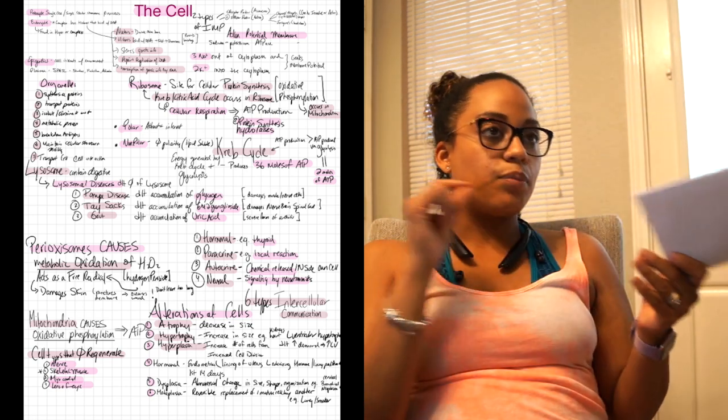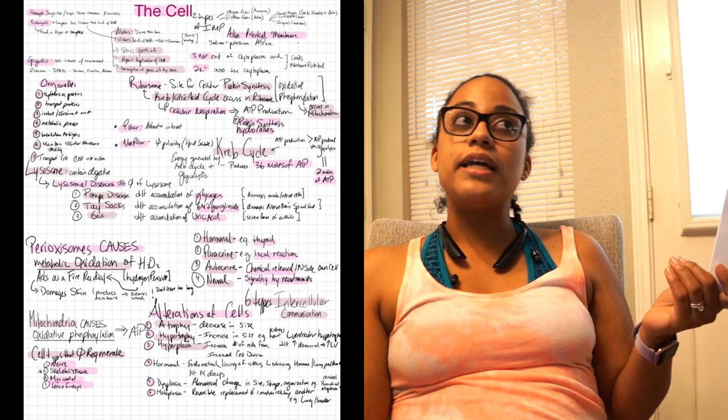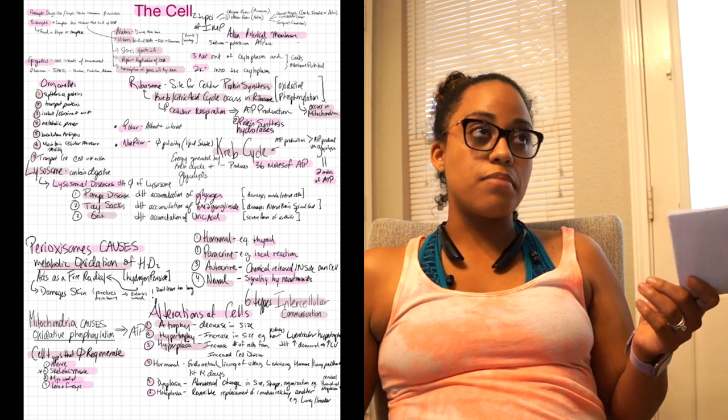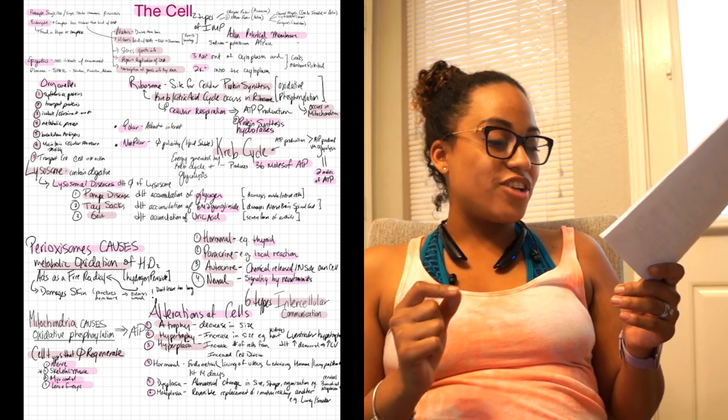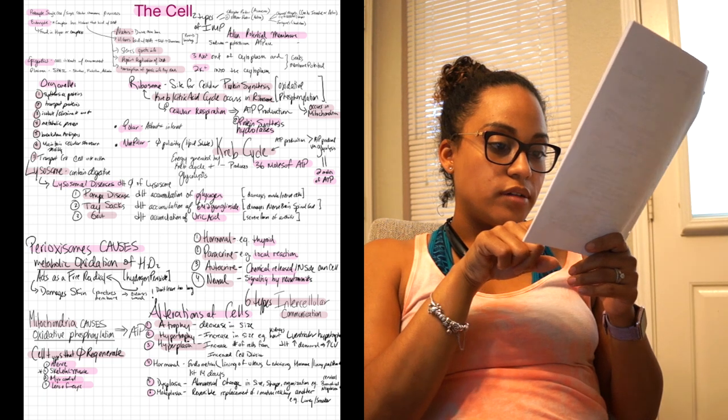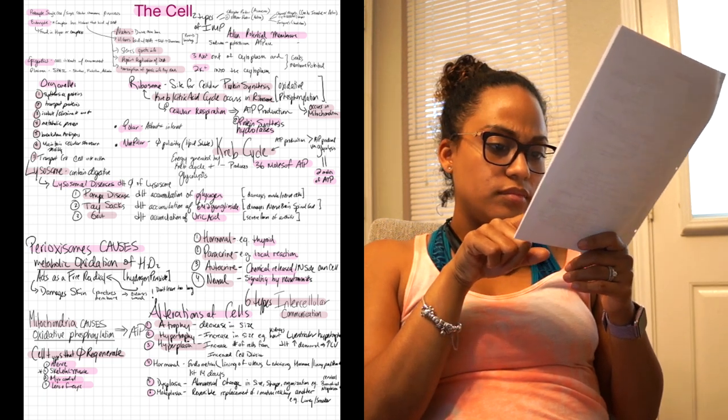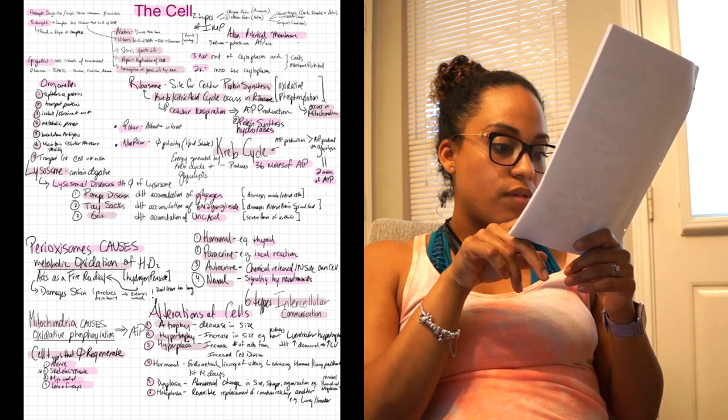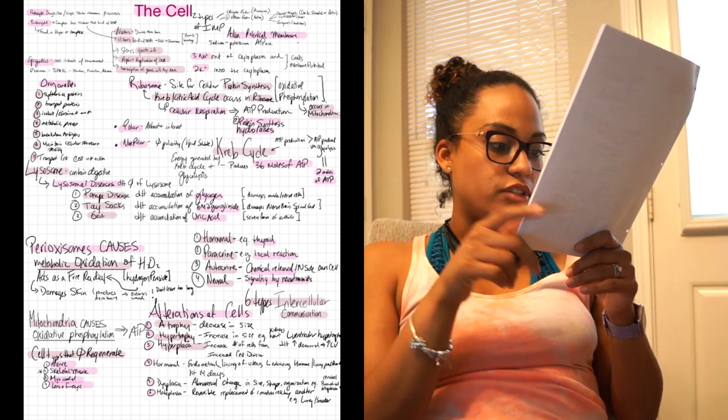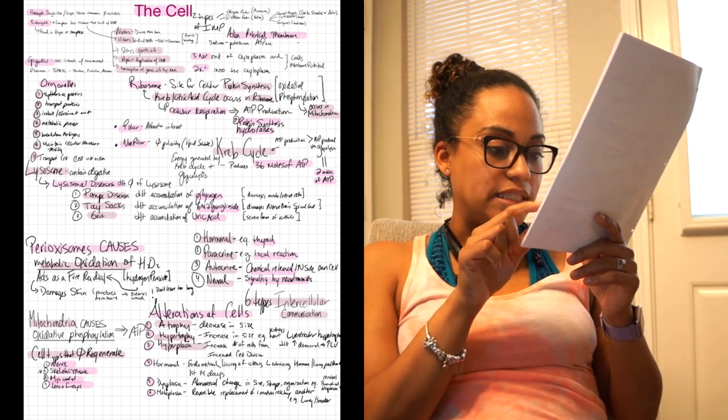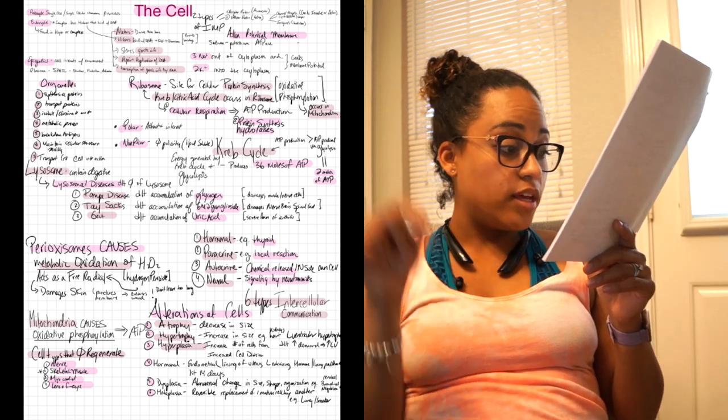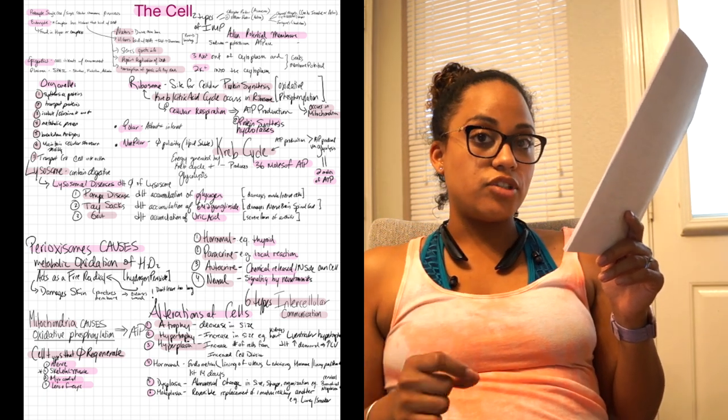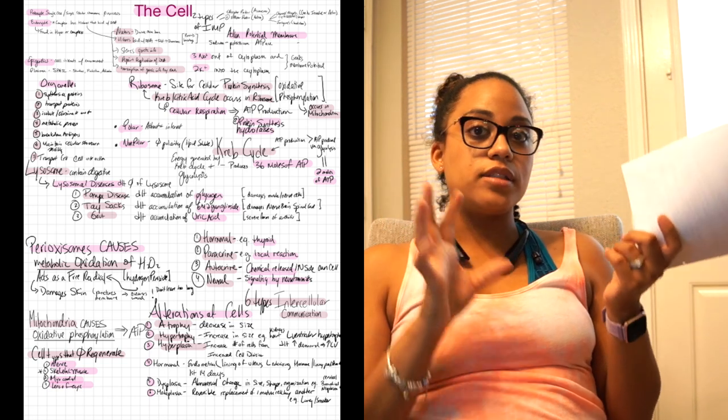The third one is hyperplasia. Plasia, play, too much at play, so therefore cells are dividing into an increased number. Hyperplasia, so increased number of cells due to... increased cell division maybe. I think that increased demand is for the left ventricular hypertrophy, so the hyperplasia is the increased number of cells from increased cell division. So cell division increase, more at play, more dividing, hyperplasia.